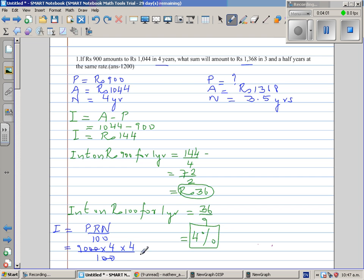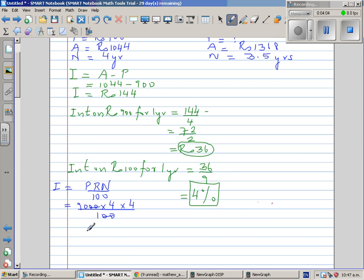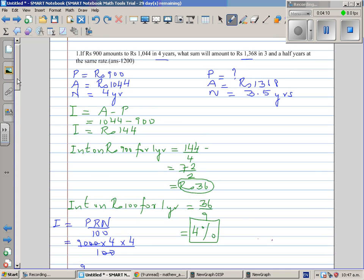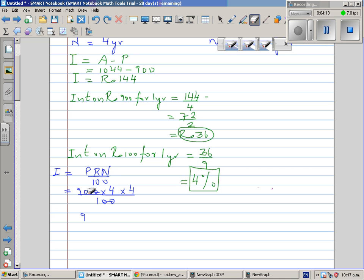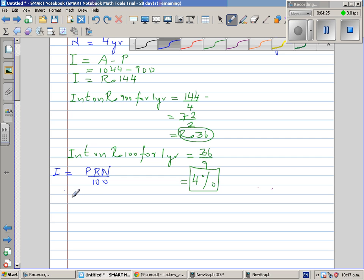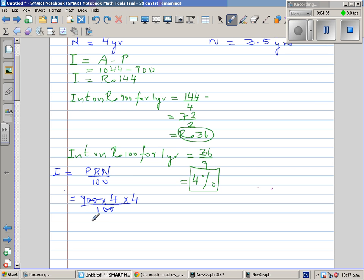So this is 9, this is 90... 900, not 9000. Sorry. Let me do it properly to confirm whether the answer that we got is right or wrong. So this is 900 times rate is 4, and the number of years is also 4 divided by 100. And here we got 9 times 16, which is 144. So our answer is right, 144.